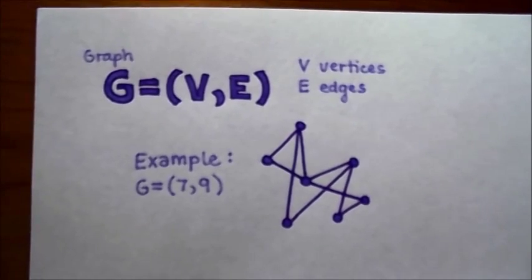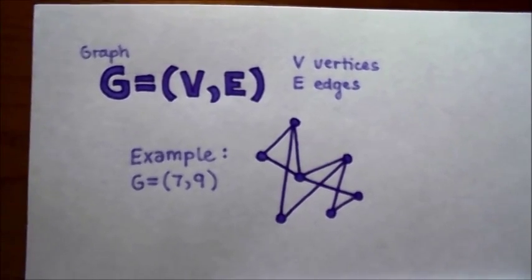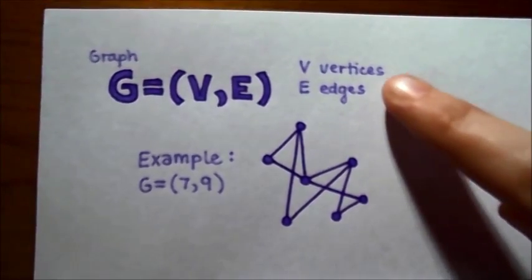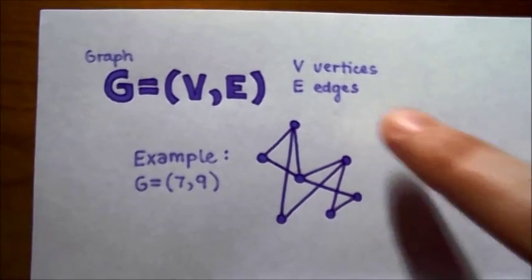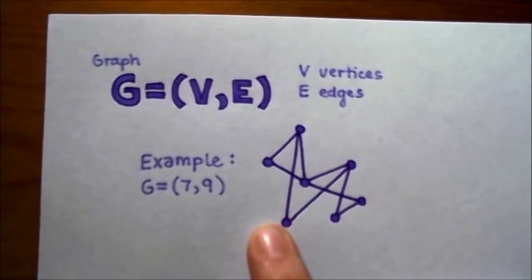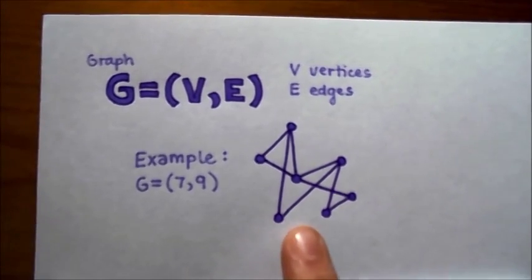First, a little bit of notation. Here's a notation for the graph G with V vertices and E edges. Here's an example of such a graph with 7 vertices and 9 edges.